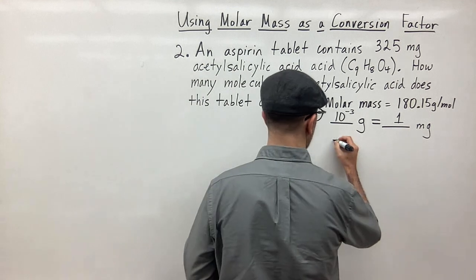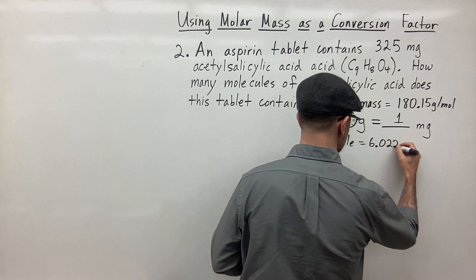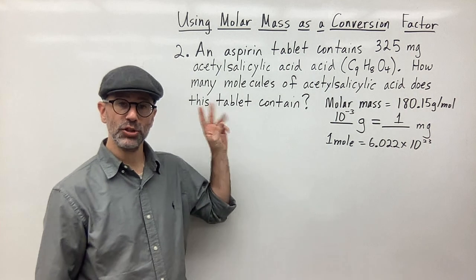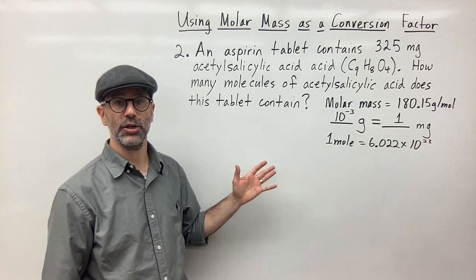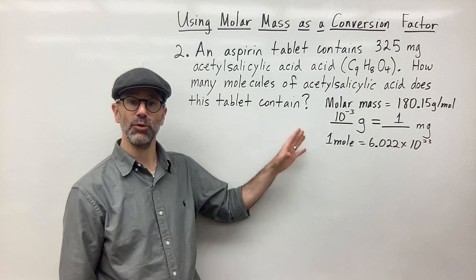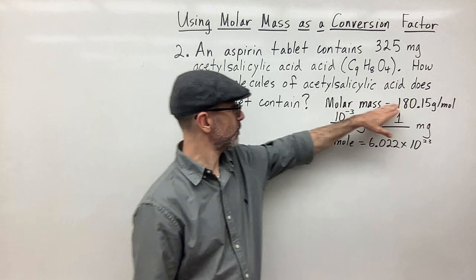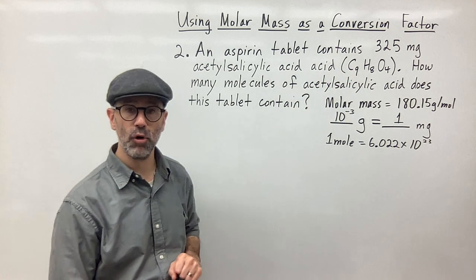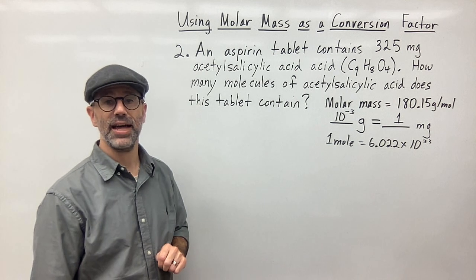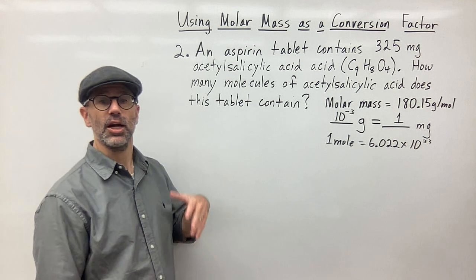We also need one mole is equal to 6.022 times 10 to the 23rd. That's the first step — there are two steps in any word problem. The first step is to pull out the information and your conversion factors. The molar mass we pulled out from the periodic table by calculating it from the formula. The second thing is to figure out what to begin with and where we're ending.